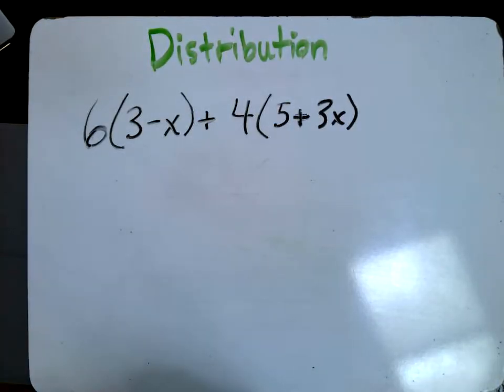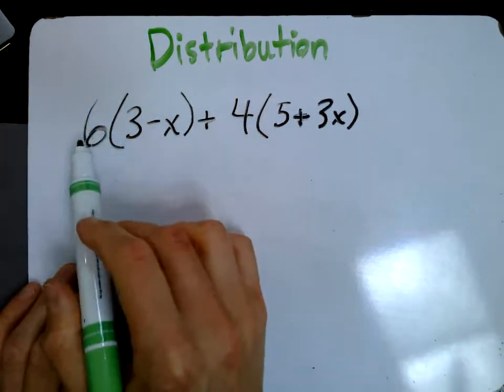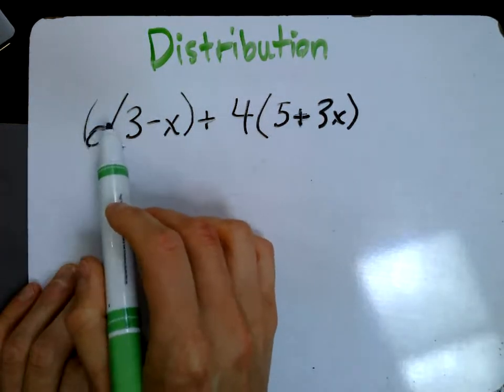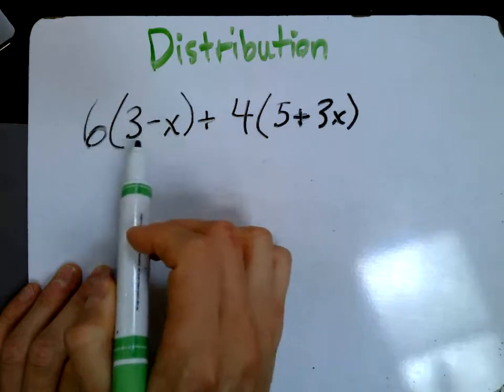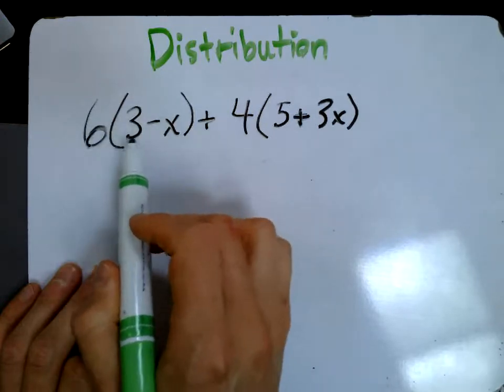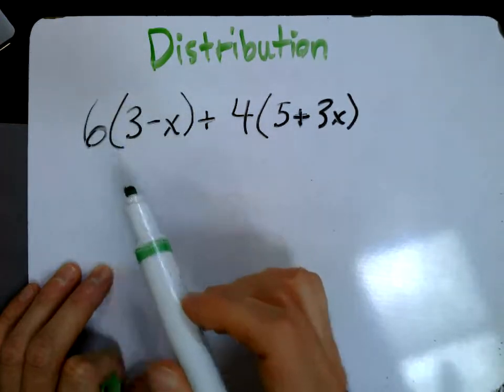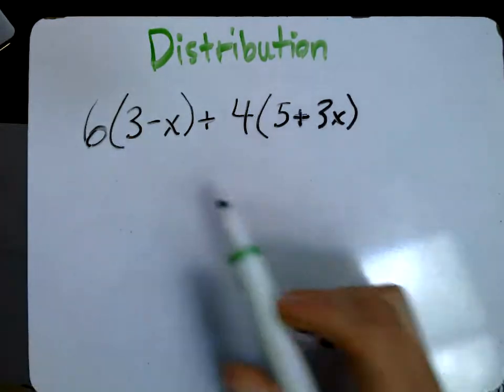Okay guys, here is the distributive property of multiplication. Remember that when we've got a number here outside just right next to a parentheses, that means it's being multiplied by this whole thing, and order of operations tells us